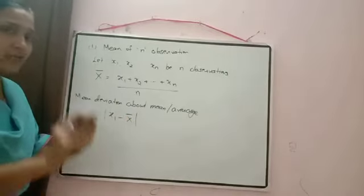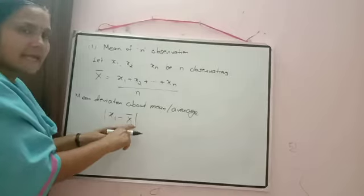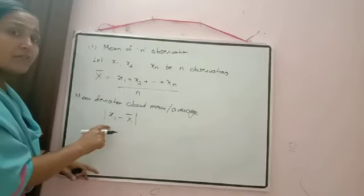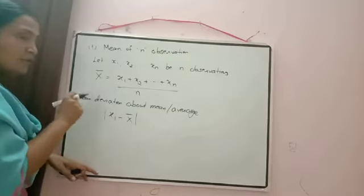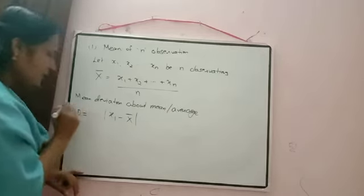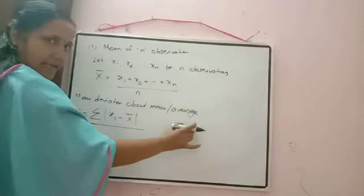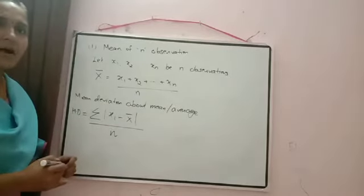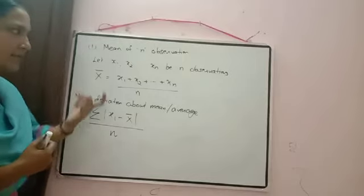We have to calculate the mean deviation. Mean deviation, as we know, means we are calculating the average. So the formula is: MD = Σ|xᵢ - x̄| / n, where we add all the differences and divide by n, the total number of observations. When we do the questions, this concept will be more clear. At present, write down the formula. First we calculate the mean, then mean deviation about mean.